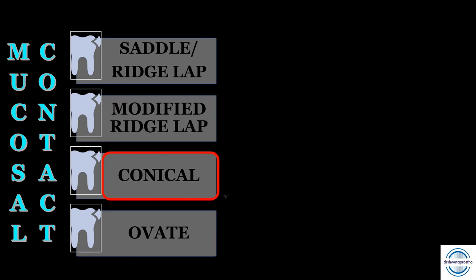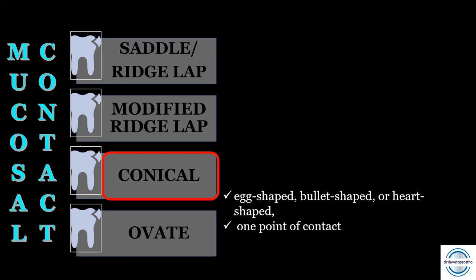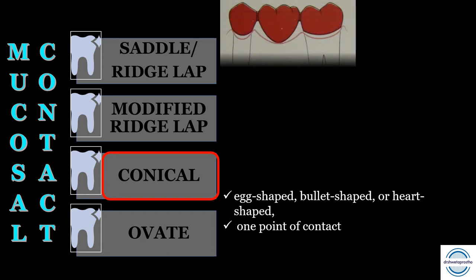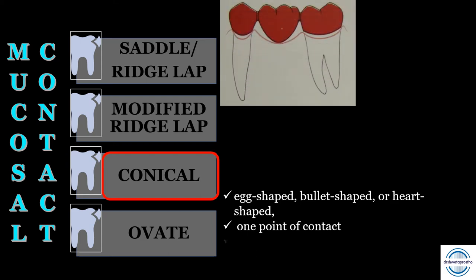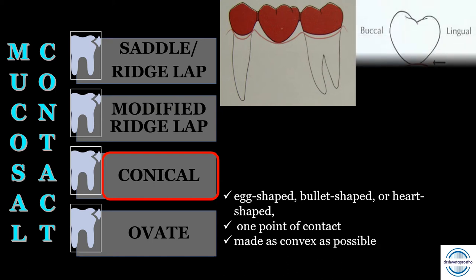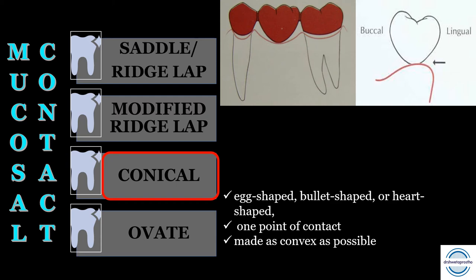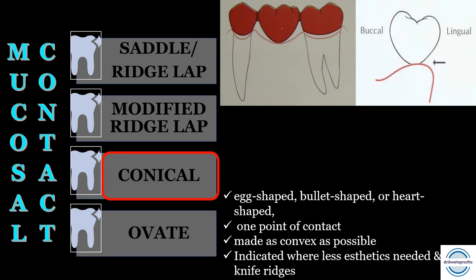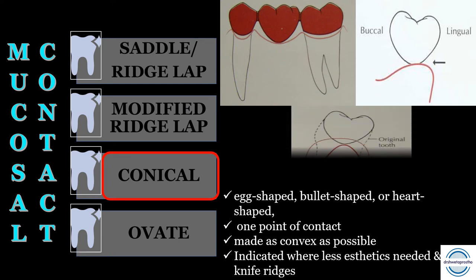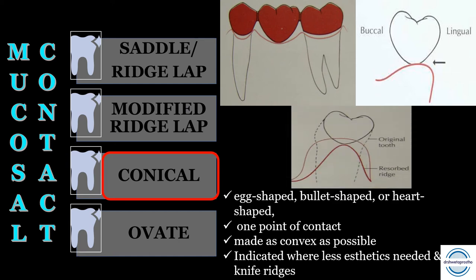The conical pontic is also called the egg-shaped, bullet-shaped, or heart-shaped pontic depending on the design. It has only one point contact at the center of the residual ridge and should be made as convex as possible. It is mainly recommended where aesthetics is of lesser concern, primarily in mandibular posterior teeth. It is mainly indicated for knife-edge ridges, because these pontics can create food entrapment on broad residual ridges.